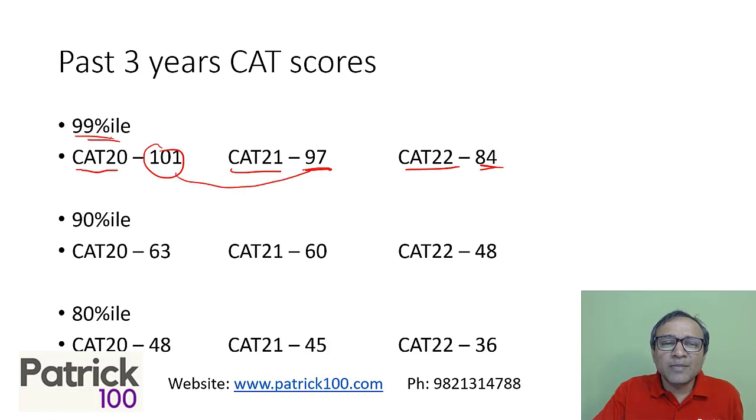So if you look at the marks required to get a percentile, it has been reducing drastically. If you look at even 90 percentile: 63, 60, and then it went down to 48.